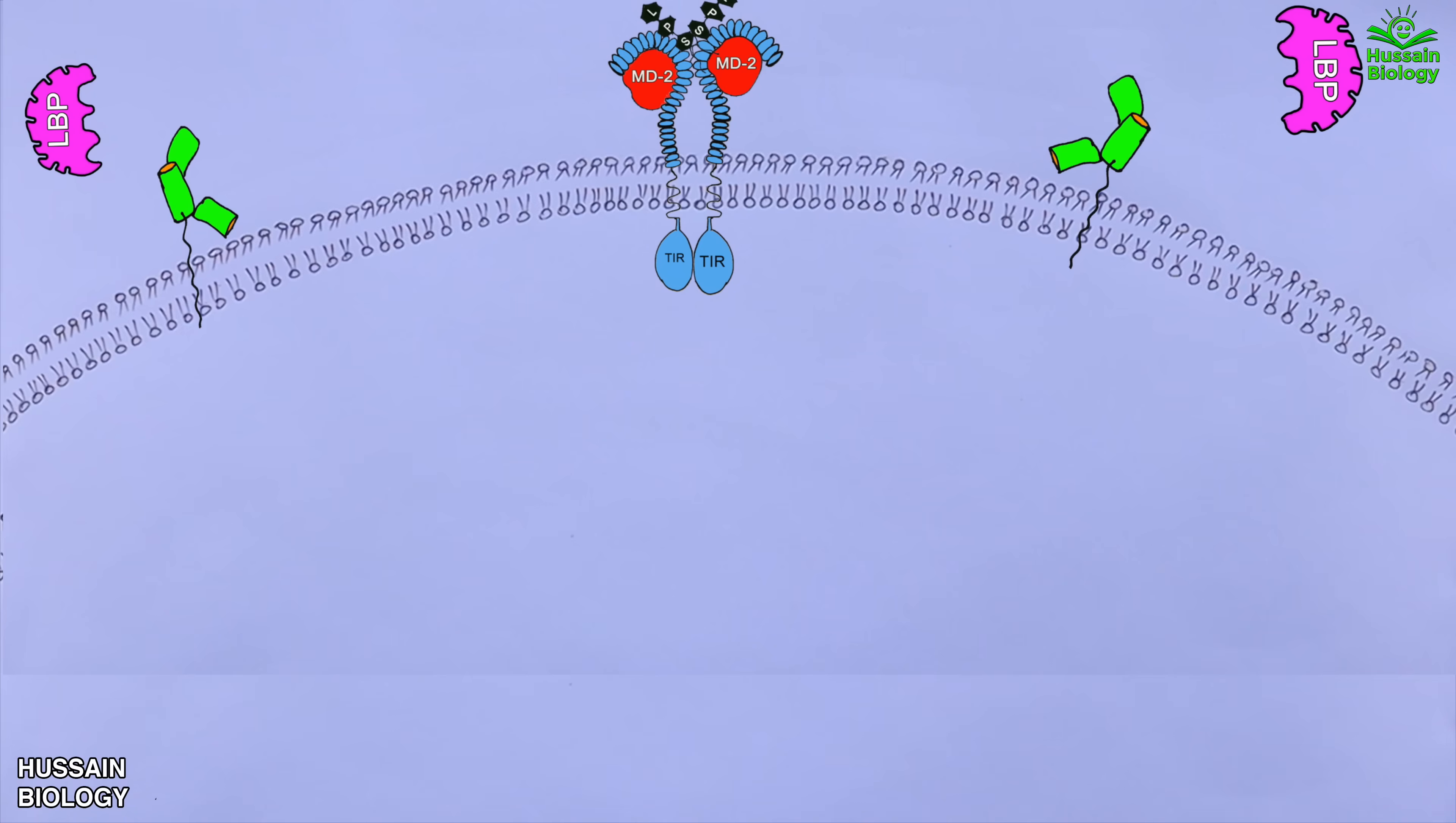Then we see here is that the activated TIR domain of TLR4 receptor recruits and activates the TIRAP protein which then recruits myD88 protein and activates it. Then this myD88 recruits IRAK1 IRAK4 complex and activates it. And this complex then recruits TRAF6 molecule as shown in the animation.